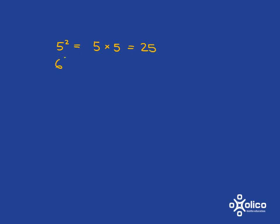If we have 6 cubed, that means 6 multiplied by itself 3 times, and so you get 216.